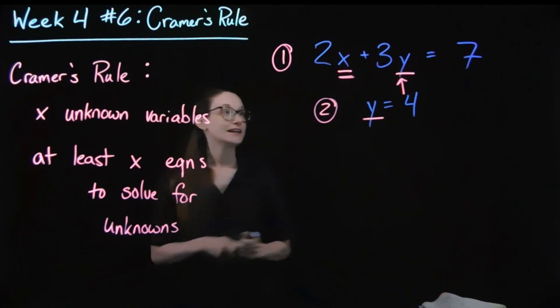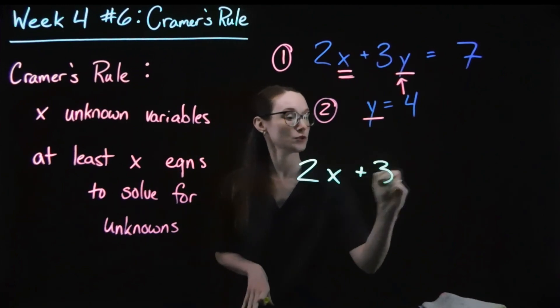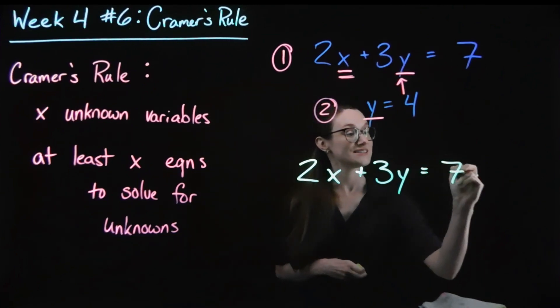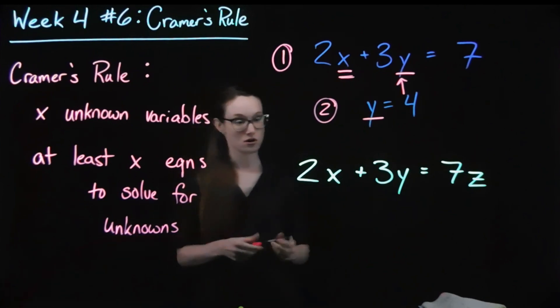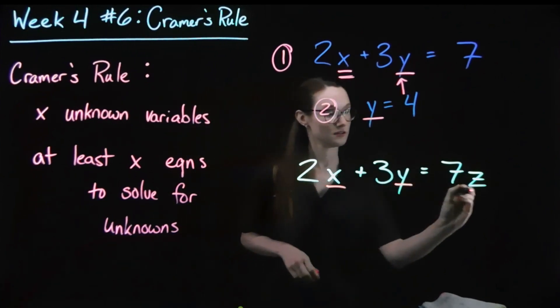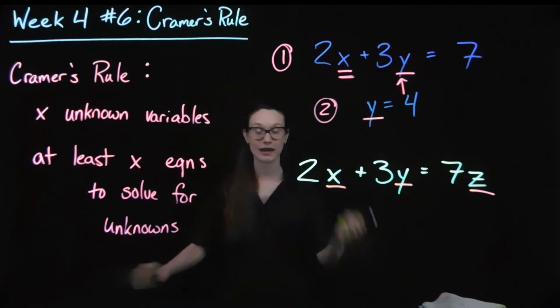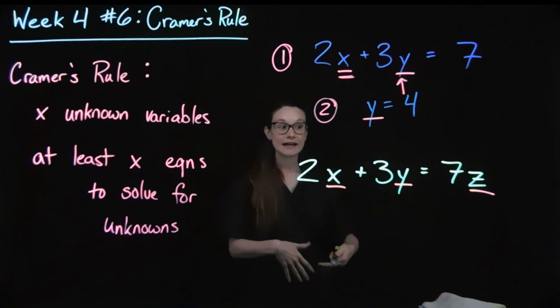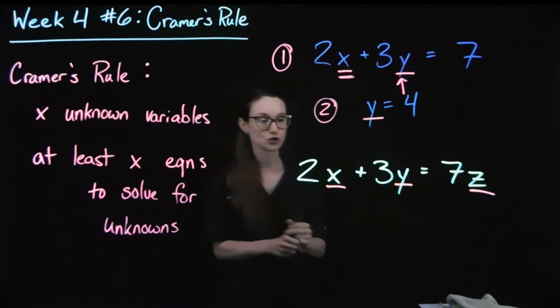Now, if I had something that instead was 2X plus 3Y equals 7Z, 3E. Now, I have three unknowns. So we're getting into what you were thinking about yesterday, where in order to solve this, I need to know more about the scenario.